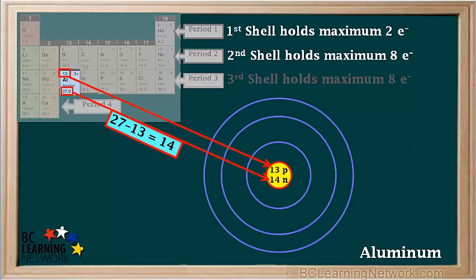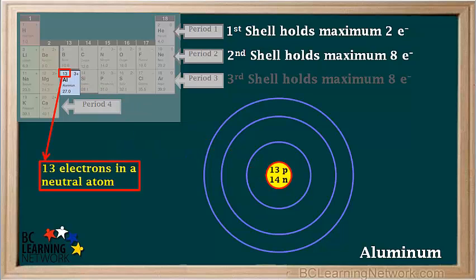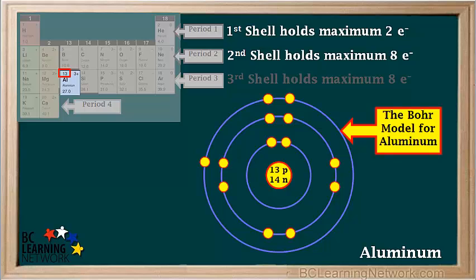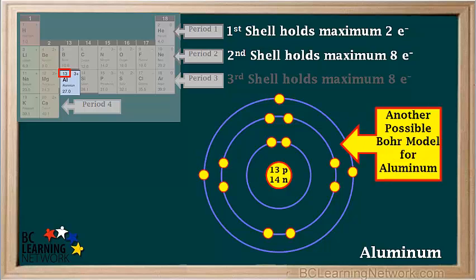Aluminum has 13 protons and 27 minus 13, which is equal to 14 neutrons in its nucleus, and 13 electrons in a neutral atom. The 13 electrons can be arranged like this. This is one possible Bohr model for aluminum — this model has one lone pair and one unpaired electron in shell number 3. Another possible Bohr model for aluminum shows 3 unpaired electrons in the third shell like this.